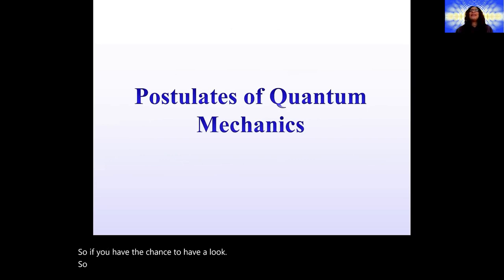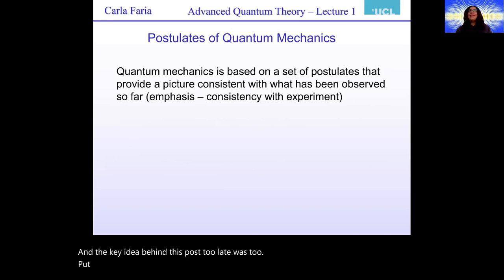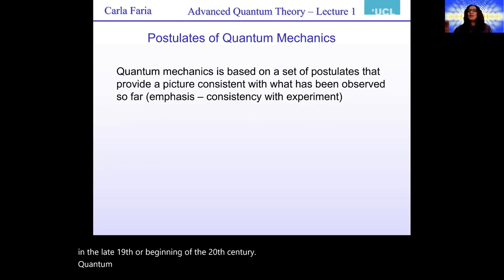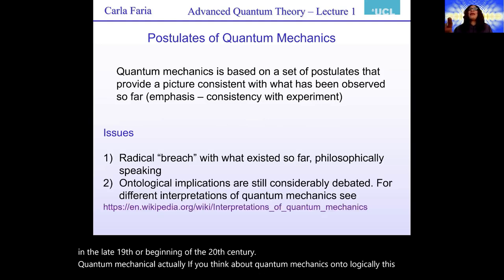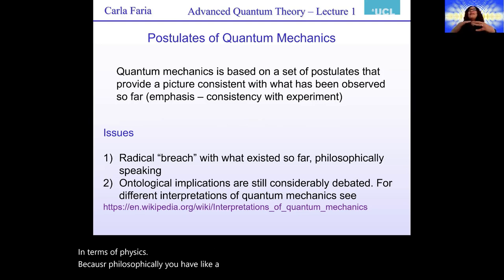So let's start with the postulates of quantum mechanics that everybody knows, hopefully. And the key idea behind these postulates was to put some kind of consistency and to provide a physical picture of the experiments and of things which were being observed. And this was quite tough for people in the late 19th or beginning of the 20th century, because quantum mechanics, if you think about it ontologically, is pretty different from everything that had been done before in terms of physics. Because philosophically, you have a radical, radical bridge with everything people knew.